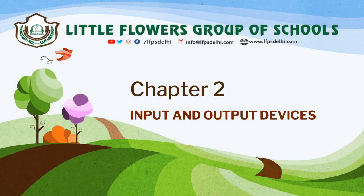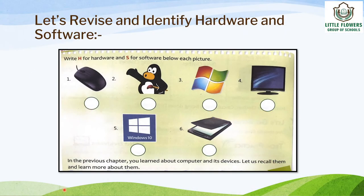Hello students. Today we will learn chapter number 2: Input and Output Devices. Let's revise — identify hardware and software. Write H for hardware and S for software below each picture. In the previous chapter you learned about computer and its devices, and now let us recall them and learn more about them.